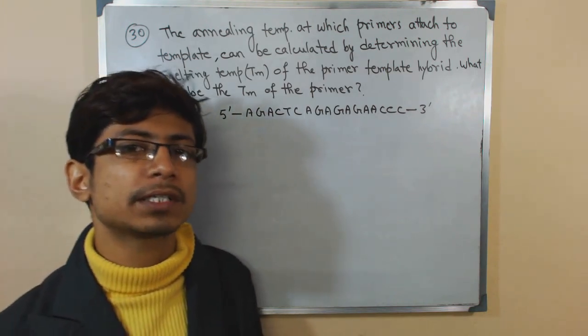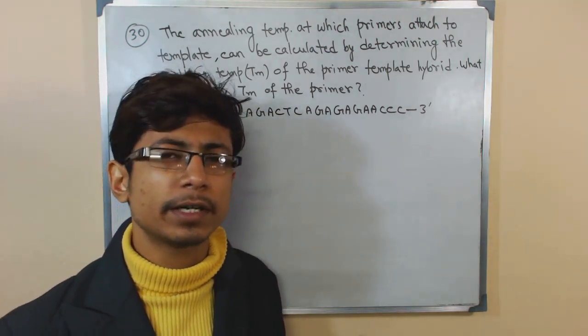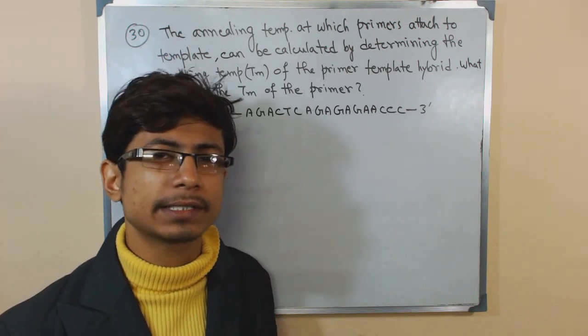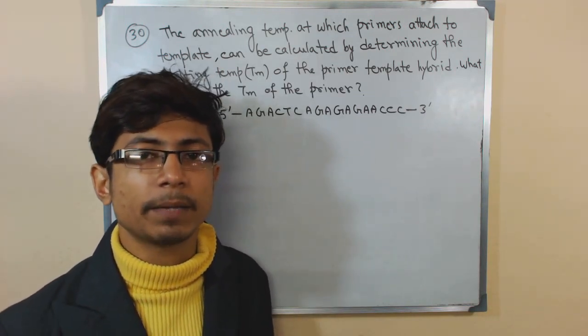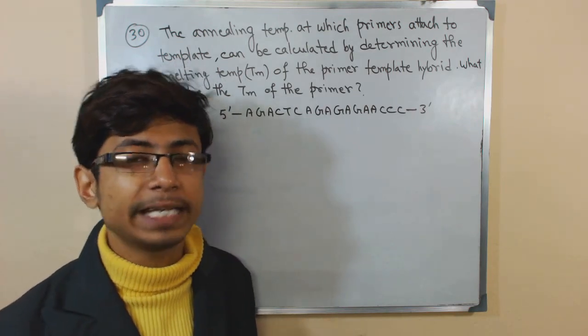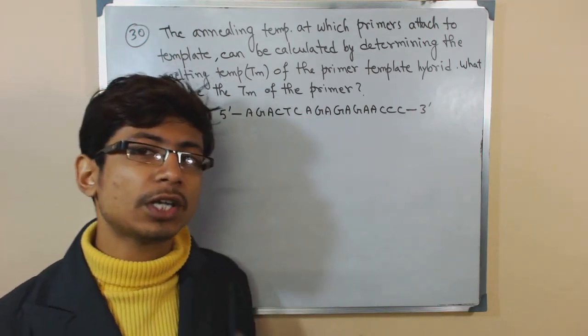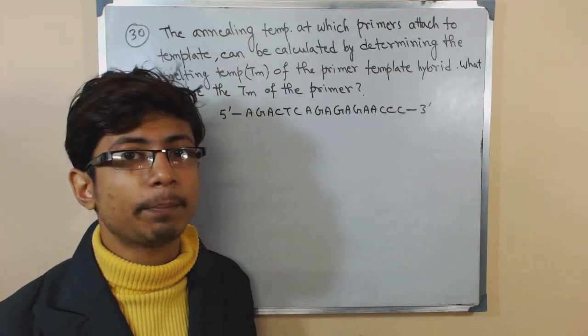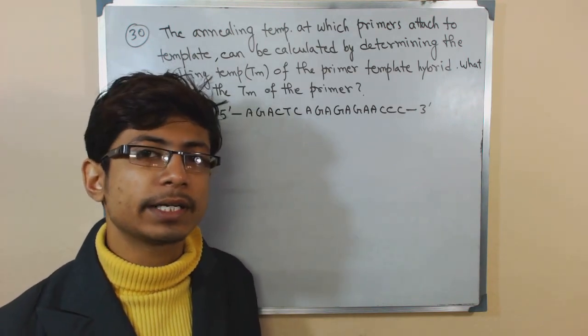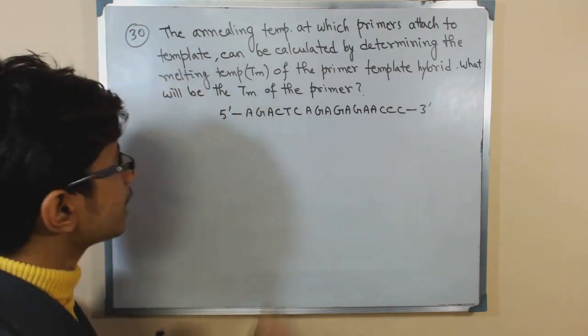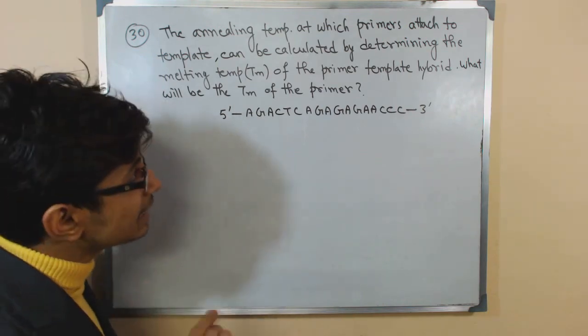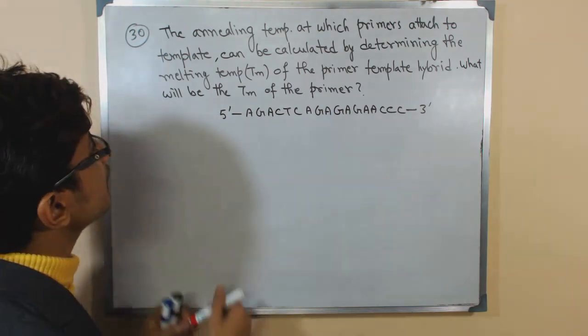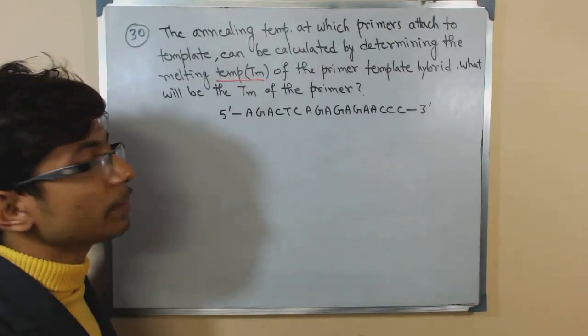For standardizing a PCR, many times you need to calculate this temperature. Even one month has been taken by people to standardize the annealing temperature, because if annealing temperature is not standardized for your sample, for your primer, it will create a huge mess. You need to learn how to calculate the annealing temperature by calculating the melting temperature of the primer template hybrid.